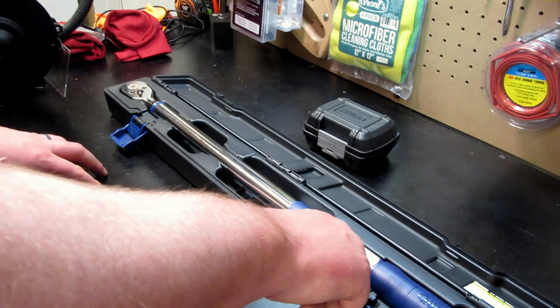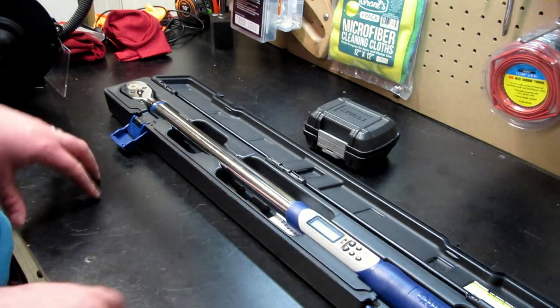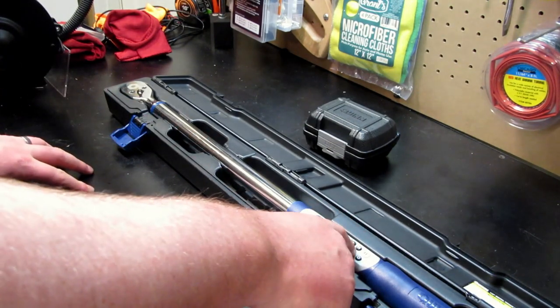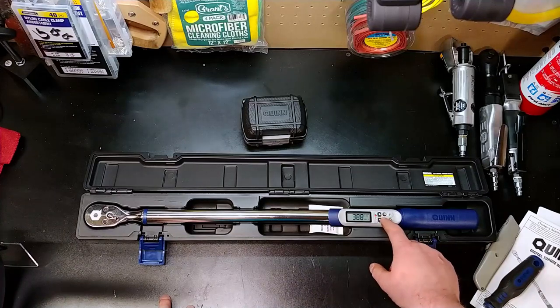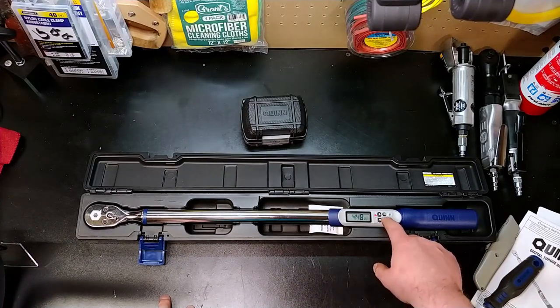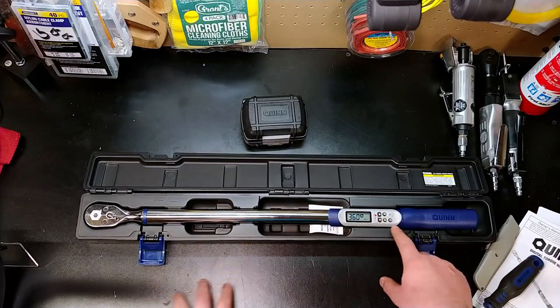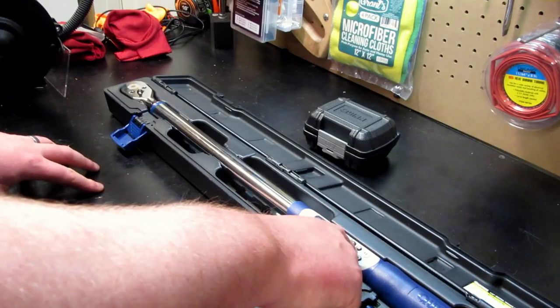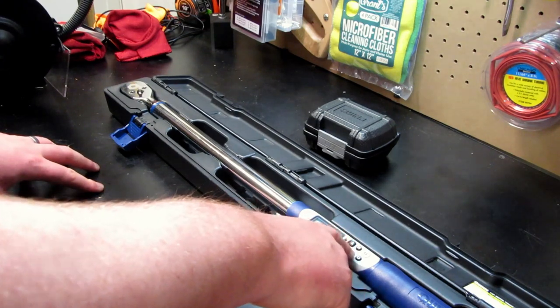It starts out here in foot-pounds. You can flip through: the angle one takes a second to get going, then foot-pounds, kilograms-centimeters, the angle, then Newton-meters, inch-pounds, and back to foot-pounds.